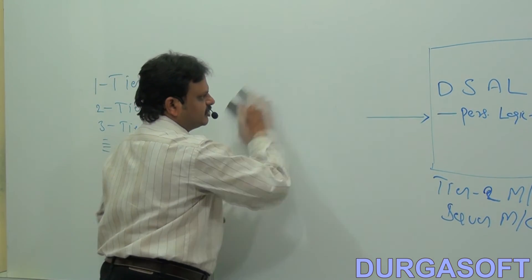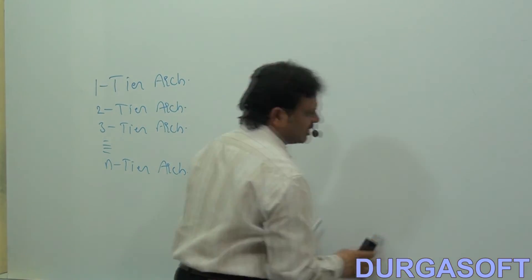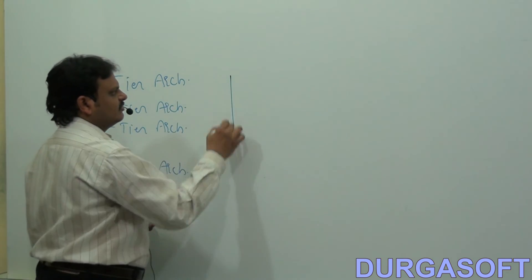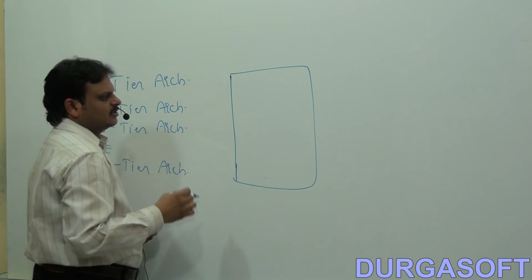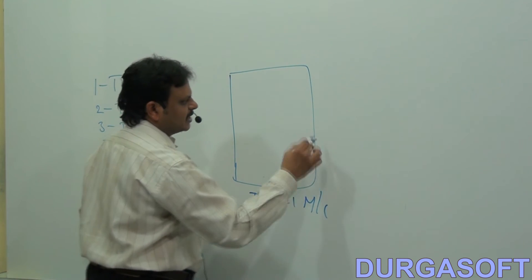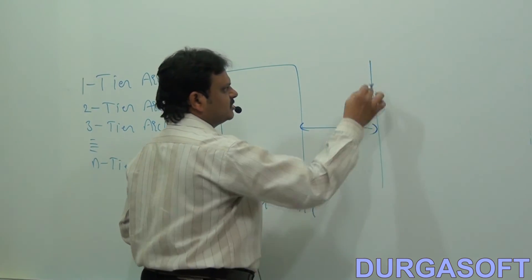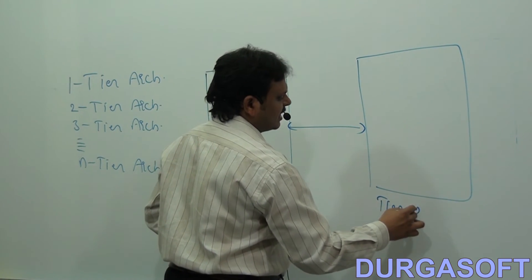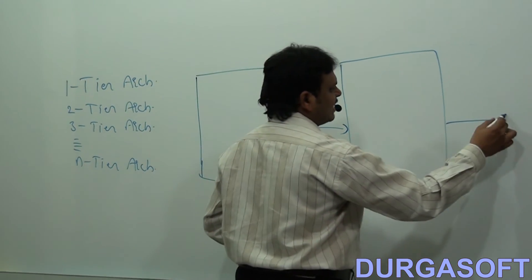After completion of two-tier architecture, we will go for three-tier architecture. Inside three-tier architecture, we are able to use three tiers of machines. This is tier one machine, connected with tier two machine. This is another one — tier two machine. And this is tier three machine.